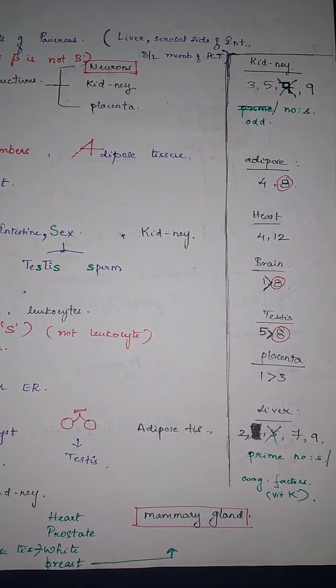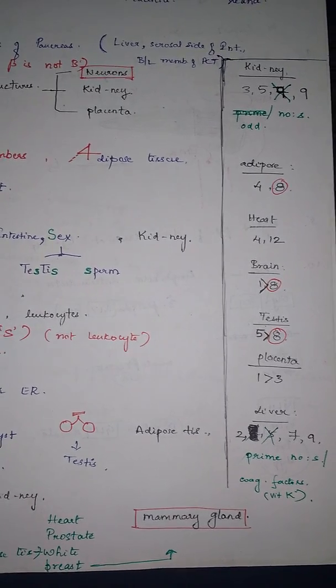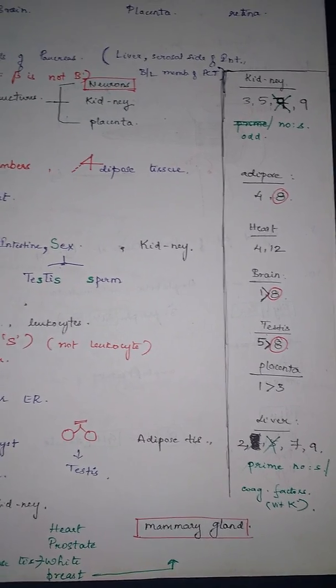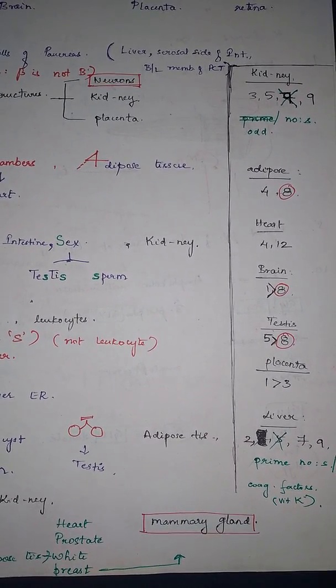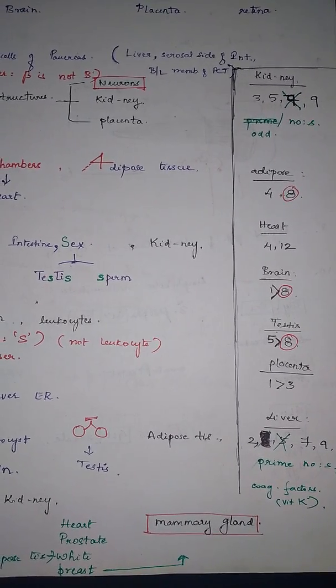Liver, we have 2, 7, and 9. They can be remembered by the coagulating factors which are vitamin K dependent and related to liver. So 2, 7, 9. And kidney, it's odd kids, so 3, 5, and 9.